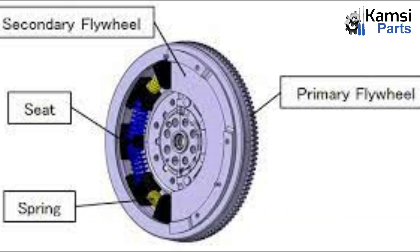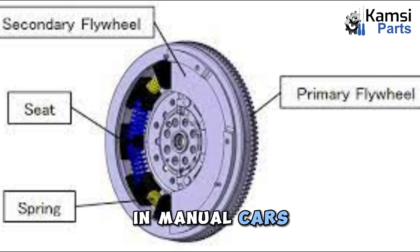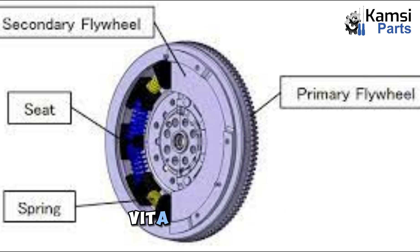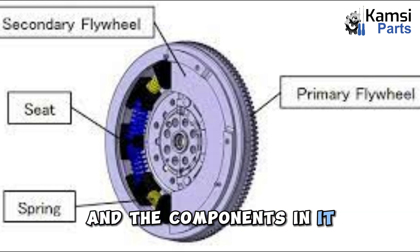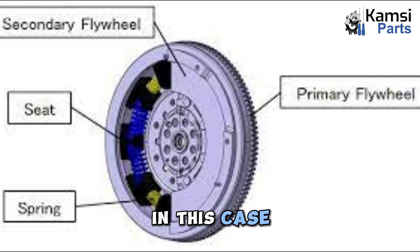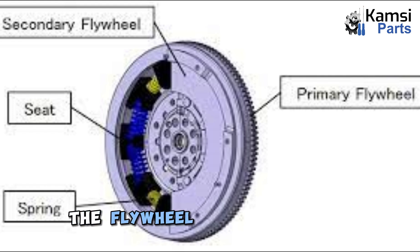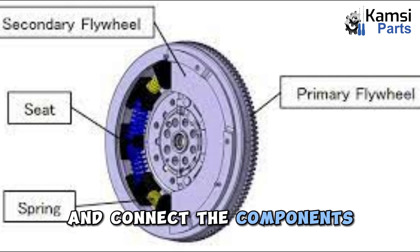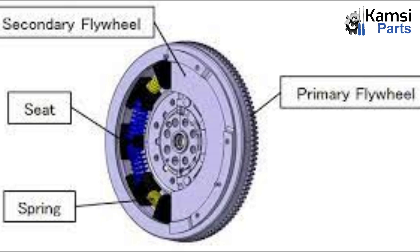2. Connecting components to the clutch in manual cars: The clutch is a very vital component, useful for running the engine and the components in it. In this case, the flywheel functions as a place to install the clutch and connect the components contained in the clutch.